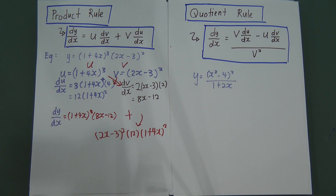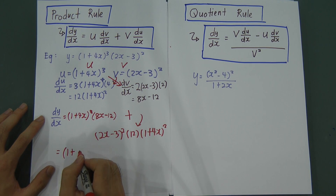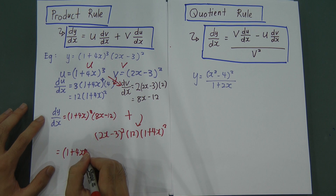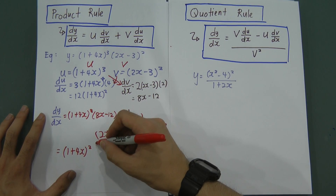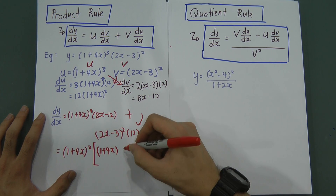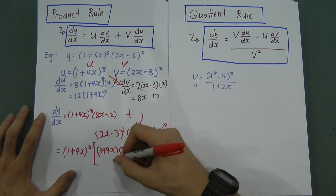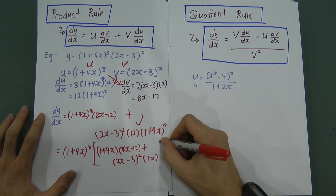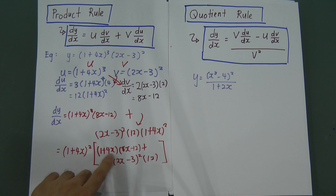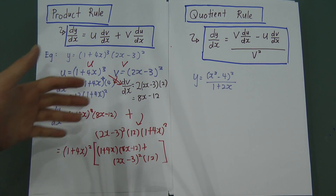You can now factorize. Both terms contain (1 + 4X)², so factorize that out. Since the first term was a cube, after factorizing out the square you are still left with (1 + 4X) inside. So the factorized form is (1 + 4X)² times [(1 + 4X)(4X − 12) + 12(2X − 3)²]. You can expand everything and simplify further on your own — I'm just showing you the rule here.